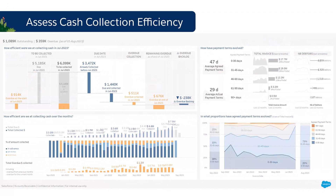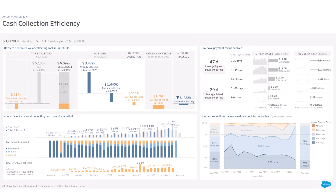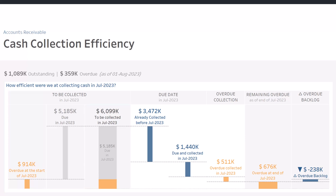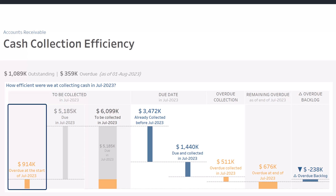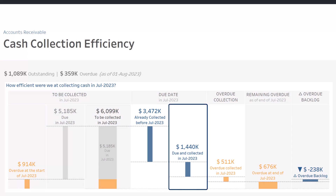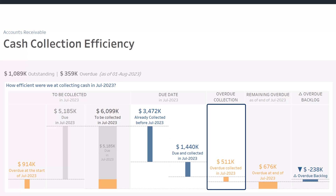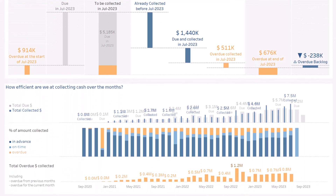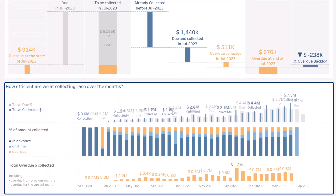Finally, let's assess your cash collection efficiency. At the top left, your efficiency for the previous month: what should have been collected in July from invoices due in July; from previous months' overdue invoices; what was collected in advance — earlier than July; what was due and paid in July; how much of the overdue amount from previous months has been collected; and what remains to be collected at the end of the month. Below, the evolution of your efficiency over the months.